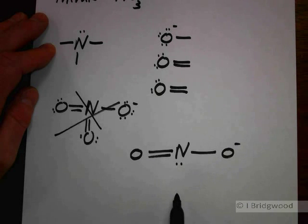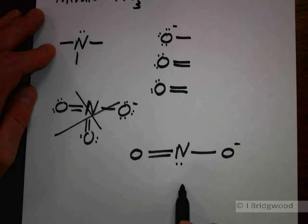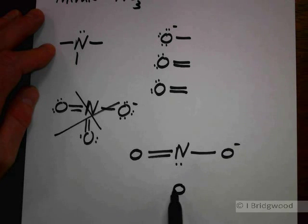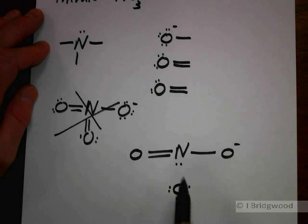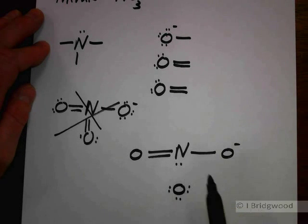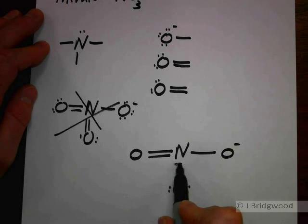The other oxygen has six electrons in its outermost shell: one, two, three, four, five, six. It needs two more. Nitrogen can supply that pair of electrons in the form of a dative covalent bond.